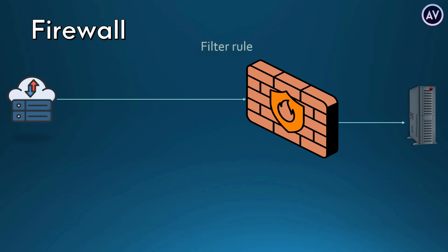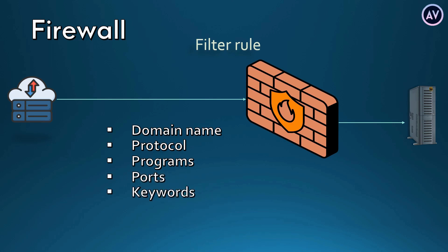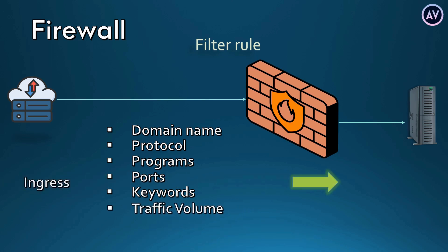Firewalls don't just make rules based on IP addresses — they can also make rules based on domain names, protocols, programs, ports, keywords, and even traffic volume. This is also called ingress or egress, with ingress meaning inbound and egress meaning outbound traffic.